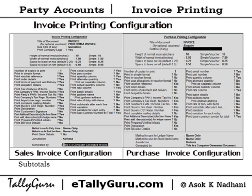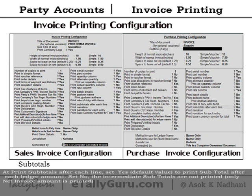Subtotals. At print subtotals after each line, set yes — which is the default value — to print a subtotal after each laser amount. Set no so that intermediate subtotals are not printed; only the net invoice amount is printed.